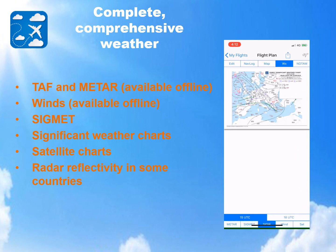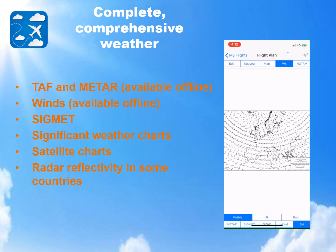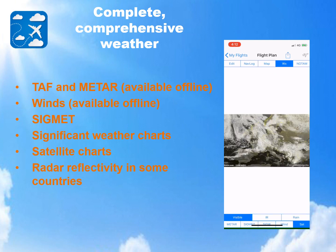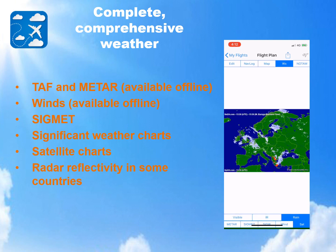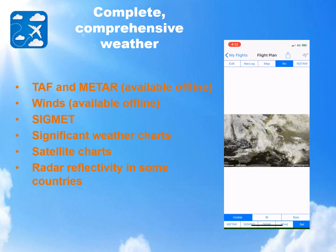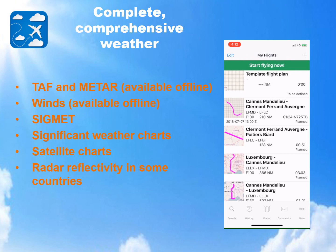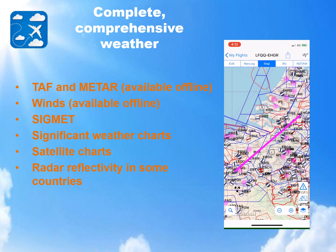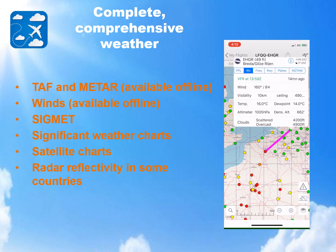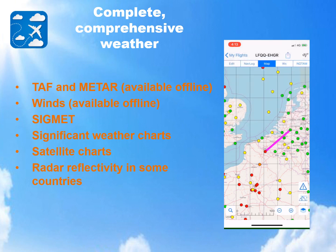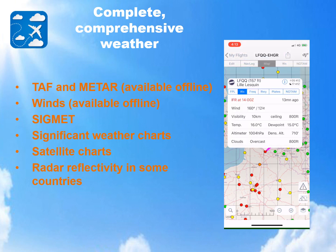Weather data includes SIGMETs, significant weather charts, wind charts, satellite pictures, and radar reflectivity. You could easily switch from one category to another using the tabs at the bottom. Subtabs are available to browse through charts and images in different categories. Displayed weather data will be cached and available offline during your flight in the next hours. AirMet is automatically fetching weather data worldwide, such as winds, TAF, and METAR — those data are also available offline during flight.